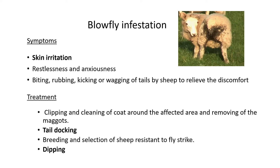The blowfly affects the rear end of sheep. If a diagram shows the parasite attacking the butt area of an animal, it's the blowfly. The symptoms are skin irritation especially around the rear, and the animal is restless and anxious, trying to bite the infected area, rubbing against things, kicking, and wagging its tail. The faeces and urine stain the wool, attracting flies that lay eggs, and the emerging larvae eat the wool and eventually the flesh of the sheep.